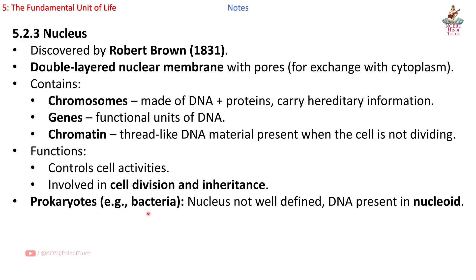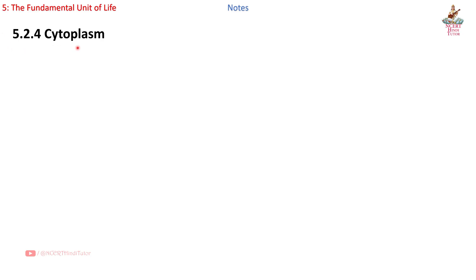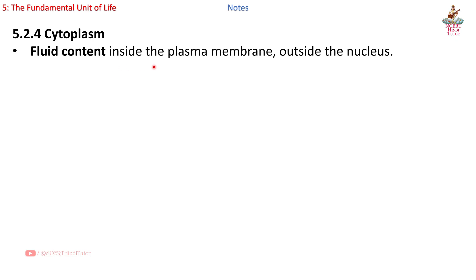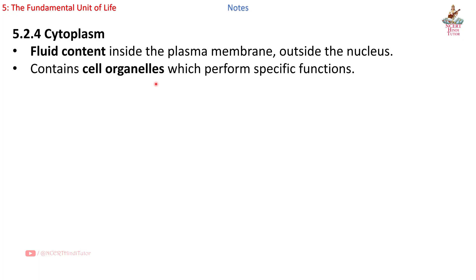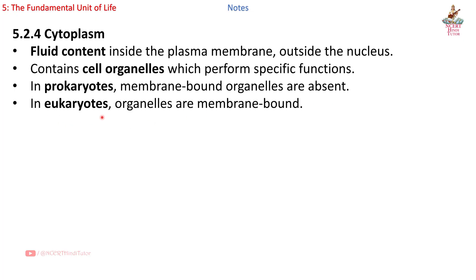Prokaryotes, e.g. bacteria: nucleus not well defined; DNA present in nucleoid. Eukaryotes: nucleus has well-defined nuclear membrane. Section 5.2.4: Cytoplasm — fluid content inside the plasma membrane, outside the nucleus. Contains cell organelles which perform specific functions. In prokaryotes, membrane-bound organelles are absent; in eukaryotes, organelles are membrane-bound.